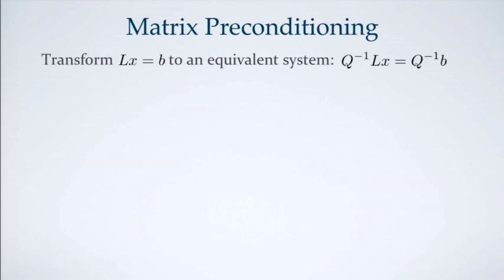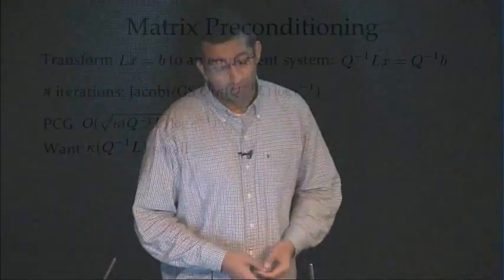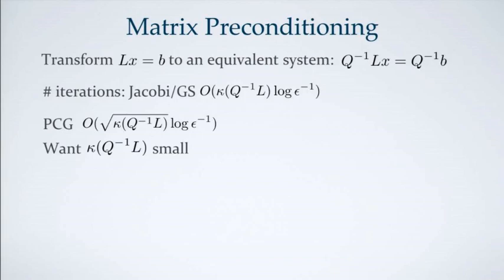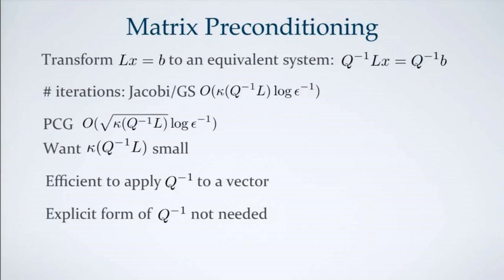That's where matrix preconditioning comes in. The idea is simple: transform the problem LX = B to an equivalent system Q⁻¹LX = Q⁻¹B. If the condition number of Q⁻¹L is small, we can significantly reduce the number of iterations for an iterative solver. We want the condition number of Q⁻¹L to be small, and we should not need an explicit form of Q⁻¹, because otherwise that would involve a matrix inversion at O(N³) — gaining nothing. These are the key design criteria for a preconditioner.